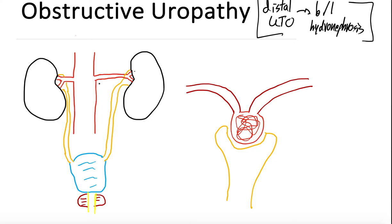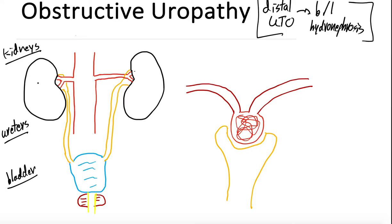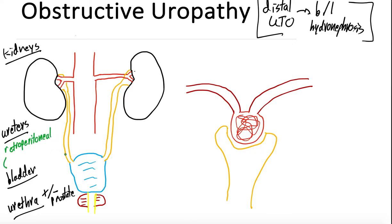When talking about obstructive uropathy, it's important to think about the anatomy because the differential diagnosis is driven by anatomy. We have two kidneys up top, then two ureters traveling down, which empty into the bladder. Urine flows from the kidneys, down the ureters, into the bladder, then through the urethra — plus or minus a prostate depending on gender. Importantly, these ureters travel retroperitoneally, going behind the bladder and inserting on the posterior surface.